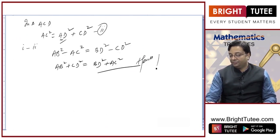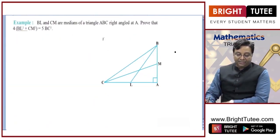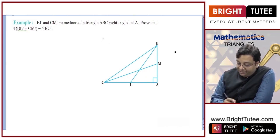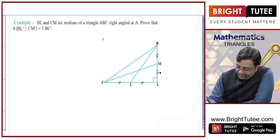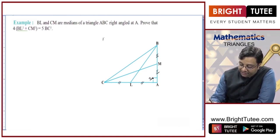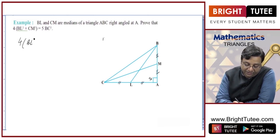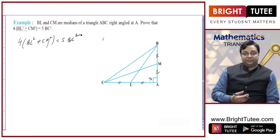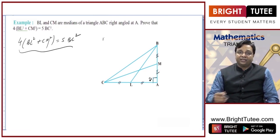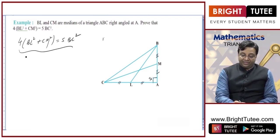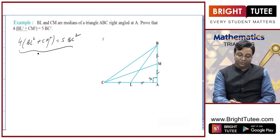BL and CM are medians of triangle ABC, right-angled at A. BL is a median so CL = LA, and CM is a median so BM = MA. We need to prove 4BL² + CM² = 5BC². The strategy is to find right triangles and apply Pythagoras theorem, then manipulate the equations to form this expression.